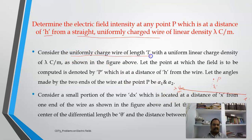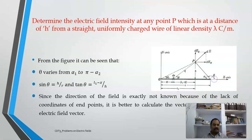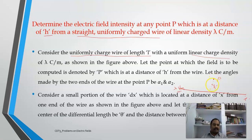Consider the uniformly charged wire of length l. I have considered this one — its length is l and it has a linear charge density lambda coulomb per unit length. Let the point at which the field is to be computed be P, at the shortest distance h from the wire. Let the two ends of this wire be A and B. These ends A and B will subtend some angles alpha 1 and alpha 2.